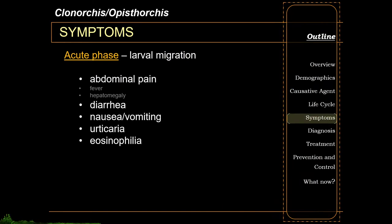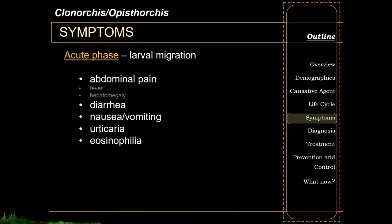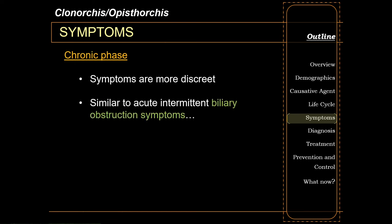The symptoms for Clonorchis and Opisthorchis can be broken down into two phases: the acute larval migration phase and the chronic adult phase. In contrast to Fasciola, during the acute phase fever and hepatomegaly are usually not present. This is primarily due to the non-invasive nature of the larval migration, meaning the human immune response is not very active during this phase. During the chronic phase, symptoms can be more discreet, similar to fascioliasis, and if present may resemble acute intermittent biliary obstruction.